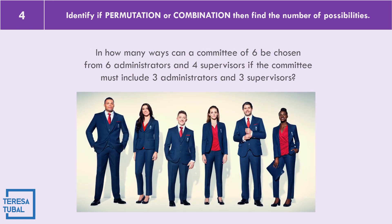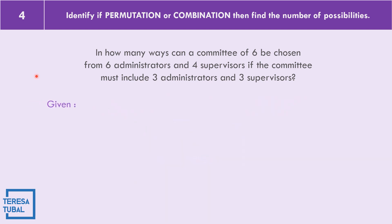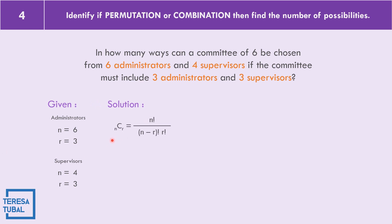Example number four: in how many ways can a committee of six be chosen from six administrators and four supervisors if the committee must include three administrators and three supervisors? Given for administrators: N equals six, R equals three. For supervisors: N equals four, R equals three. This example is a combination because order is not important. The formula is: combinations equals N factorial over the quantity N minus R factorial times R factorial.